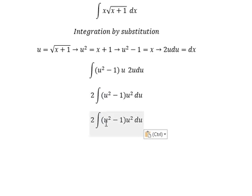u square multiply with u square and number 1. And you get u to the power of 4 minus u square.